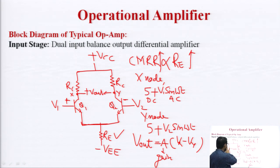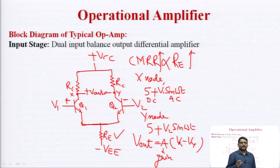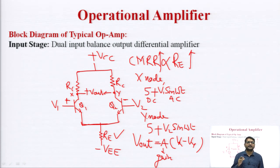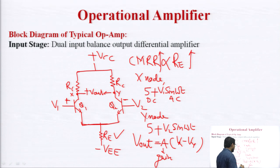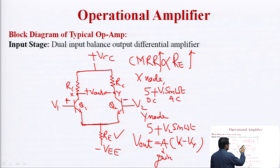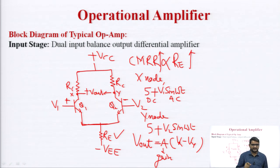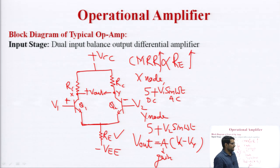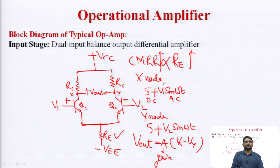In IC 741, the collector resistance Rc is replaced with an active load — a current mirror circuit. Similarly, the emitter resistance Re is replaced with a current mirror circuit, which acts as the biasing circuit. This is because a high value of Re is needed for high CMRR, but large-value resistors are not practical to fabricate on a silicon chip. Current mirror circuits are easily available in integrated circuit form.